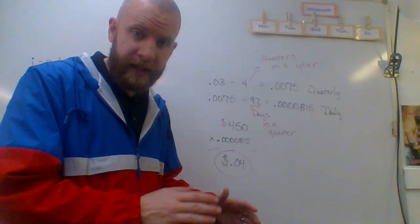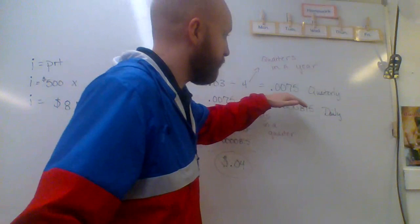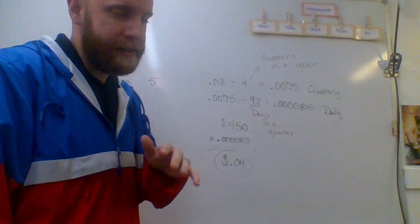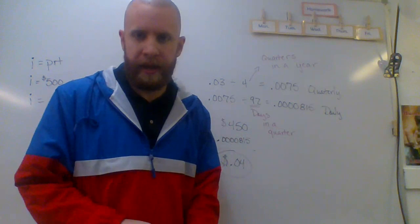So in order to find the quarterly rate, because we have to find the quarterly rate to find the daily rate, we have to first take 0.03 and divide it by four, which gives us our quarterly rate of 0.0075. Now, once we have that, we take that number, we're going to divide that by 92.